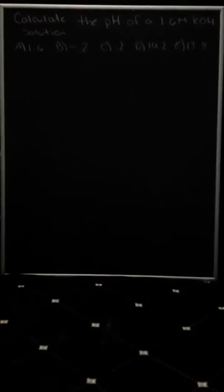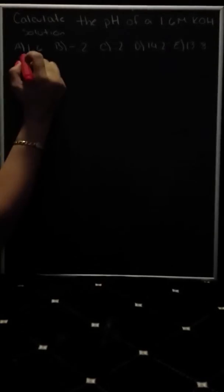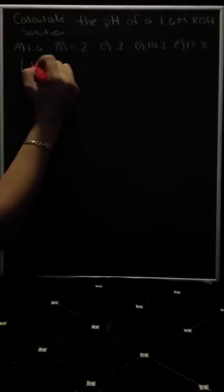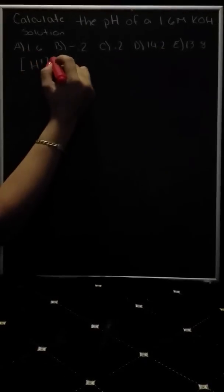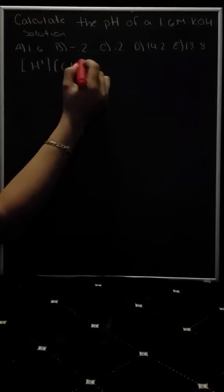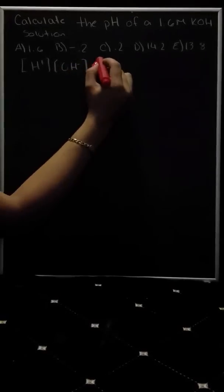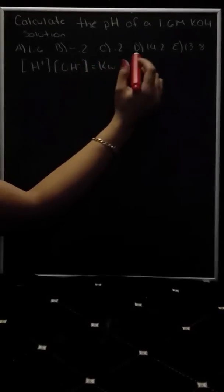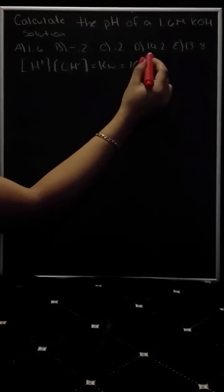The first way is to find the H concentration using the KW equation. So it'd be H plus OH to KW, which is equal to 10 to the negative 14.